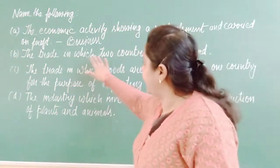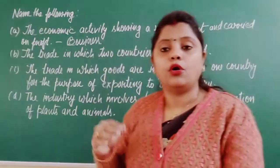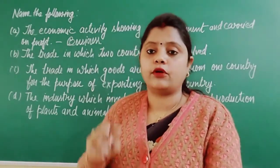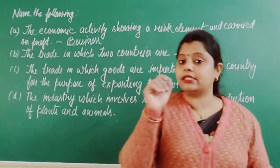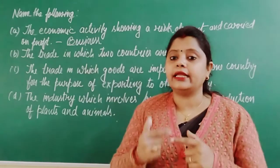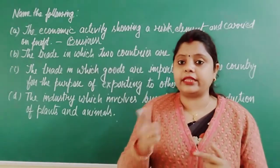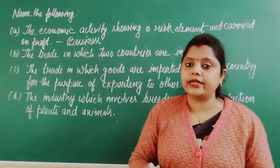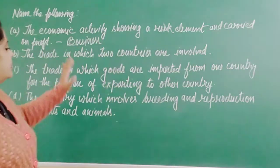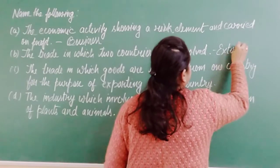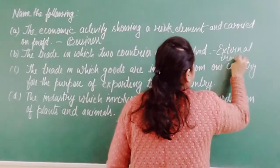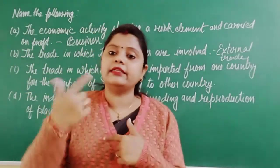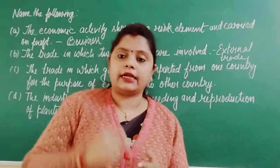The second question: 'The trade in which two countries are involved.' Obviously, two countries are involved here. When trade takes place within the nation, this is internal trade. When trade occurs beyond the boundary of one country — that means two or more countries are involved — it is termed external trade, or international trade. So the answer for the second one is external trade: within the nation is internal trade, and outside the nation with two or more countries is external trade.